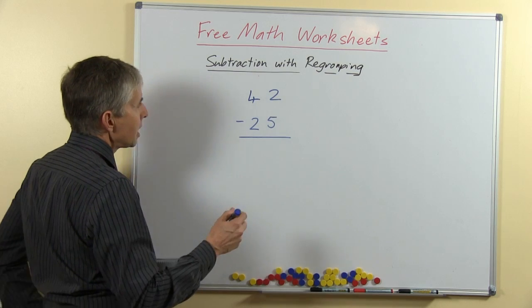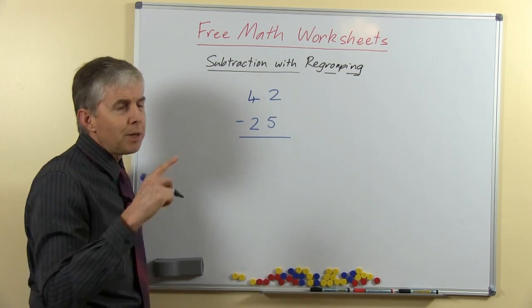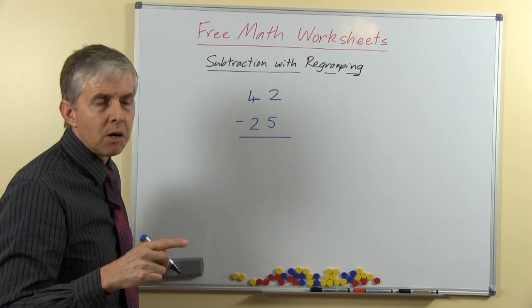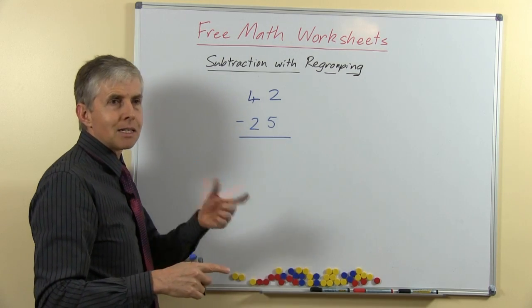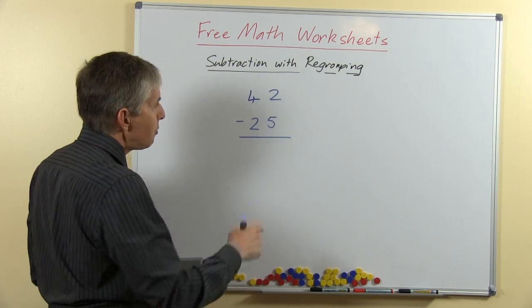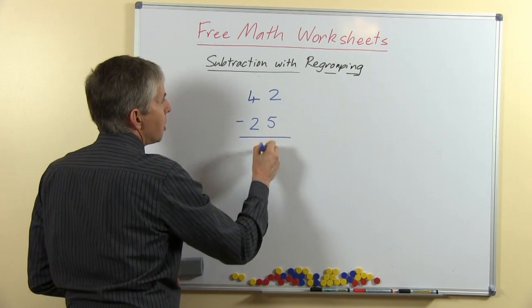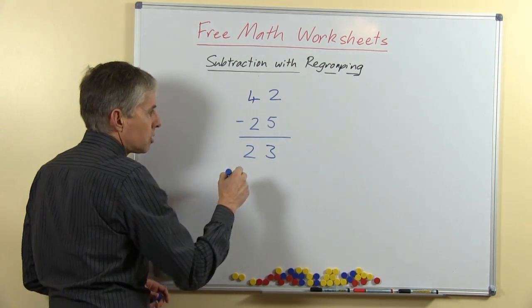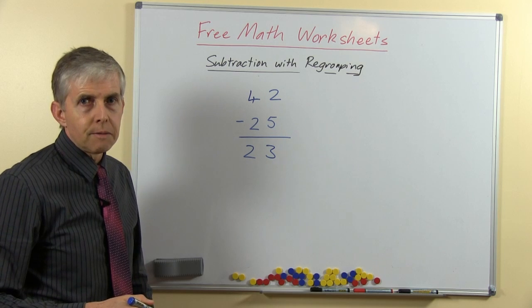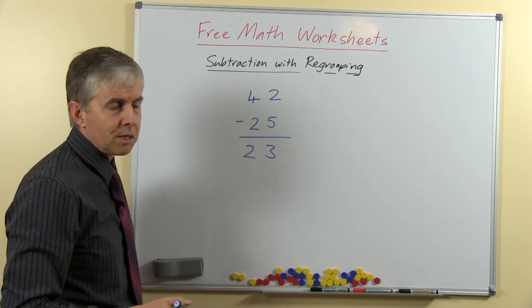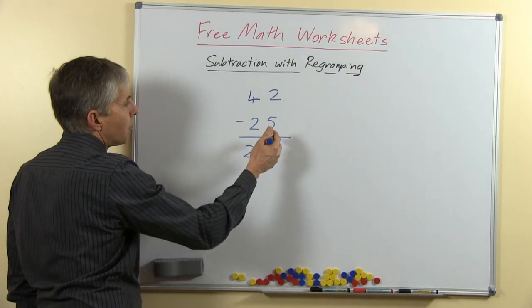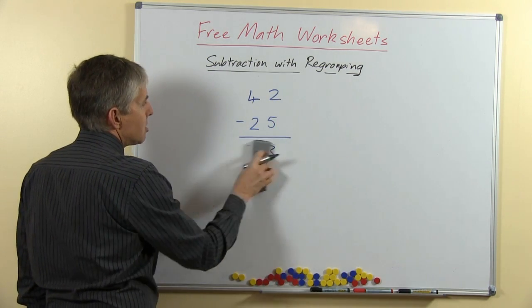So we have 42 take away 25. Now one of the biggest mistakes I've observed in my students is that they want to use the word from and then they get mixed up as to which way around it is. So if you do this quickly and say 2 from 4 is 2, get the answer. If you say it quickly enough, you don't even notice that there's a mistake being made. 2 from 5 is 3, but that's not the right way to do the operation.